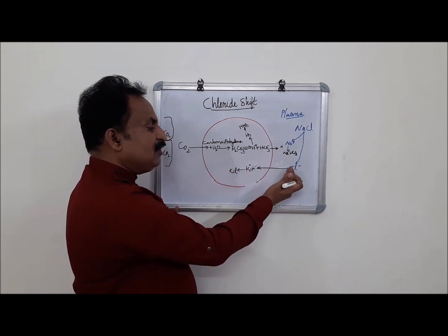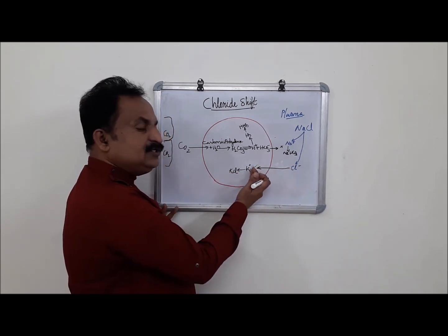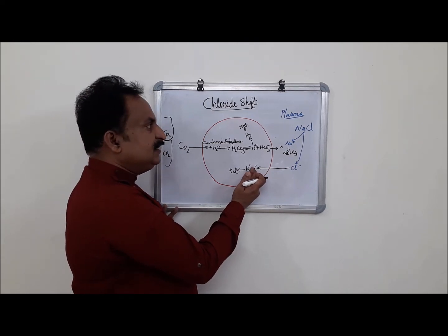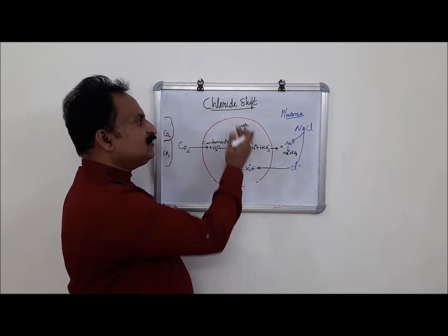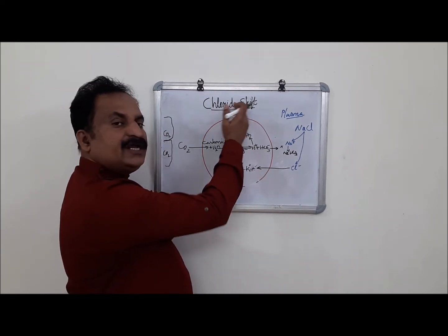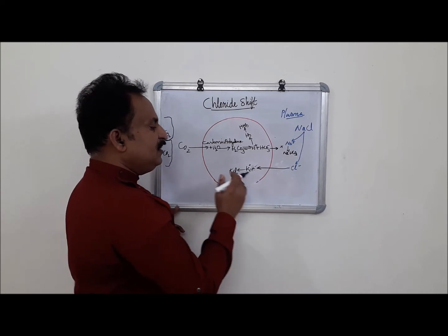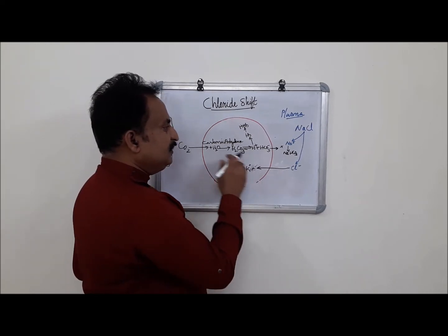Shifting of chloride ions into the RBC occurs. That is why it is called chloride shift or hamburger phenomenon.